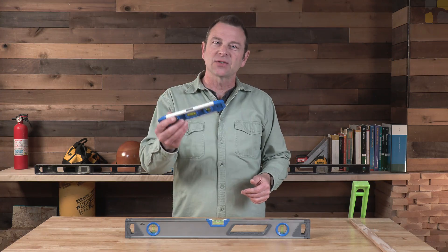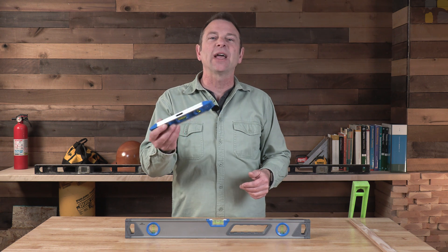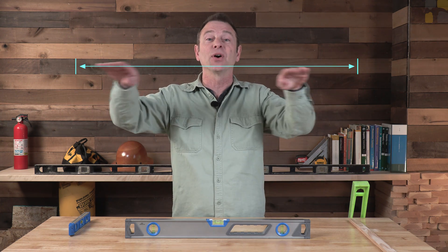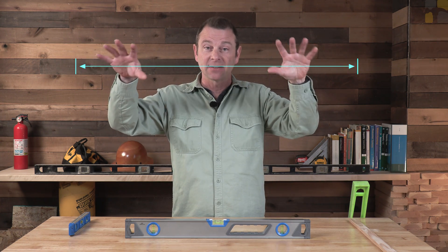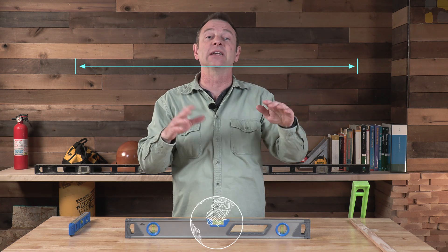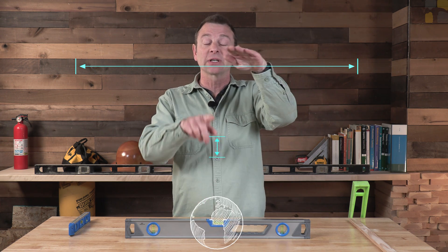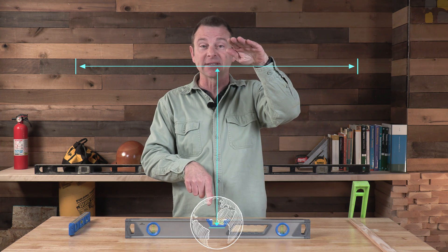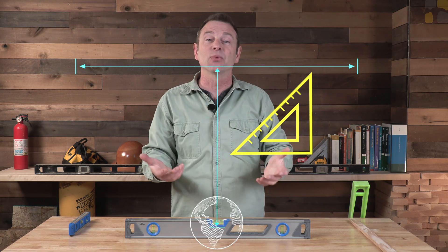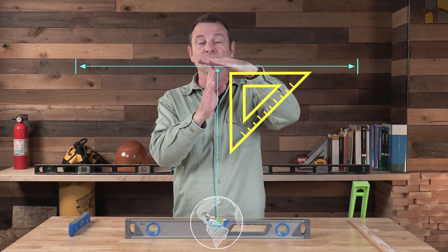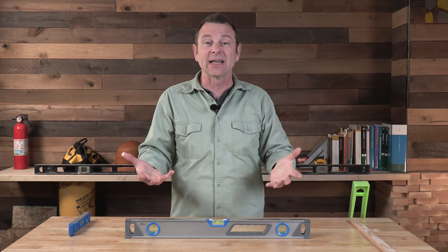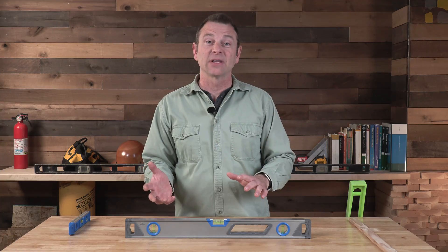Before we can go through this tool and how to use it to measure, we have to identify the condition of level. If we take a perfectly flat line, the relationship of that flat line to the center of the earth is really important. If we connect a line from the center of the earth to this flat line, the relationship would be 90 degrees between the two. If we can achieve that, we can identify it as level.